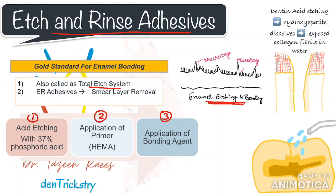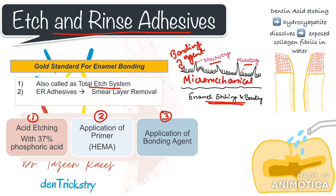On the enamel, acid etching selectively dissolves the enamel rods, creating macro and micro porosities which are readily penetrated by bonding agents. This works very well for the enamel, and this micromechanical interlocking of resin tags on the acid etched enamel is the reason for the highest bond strength.